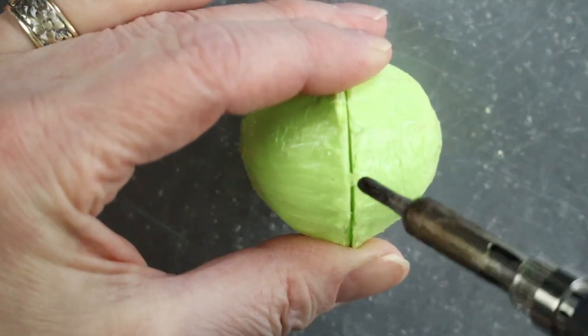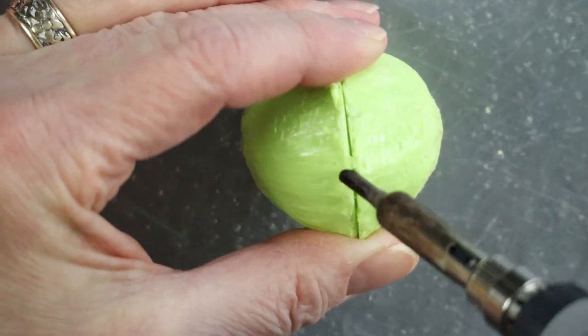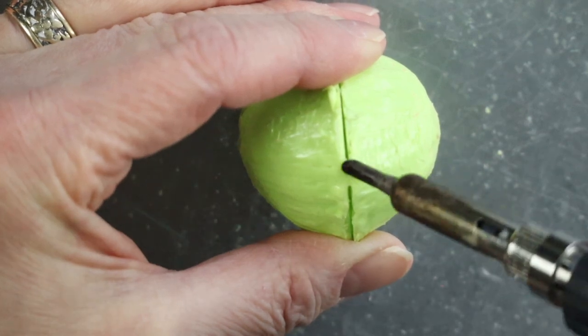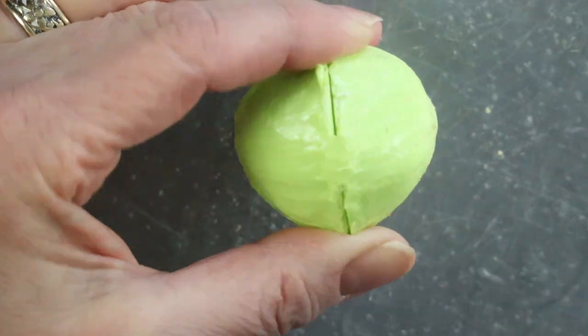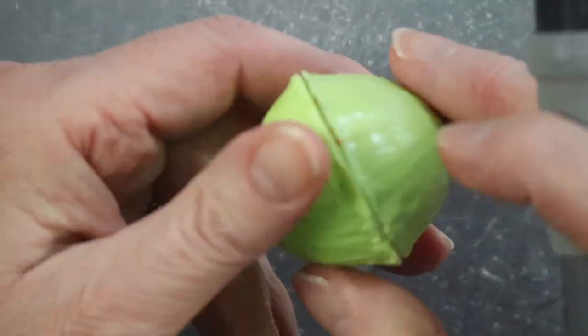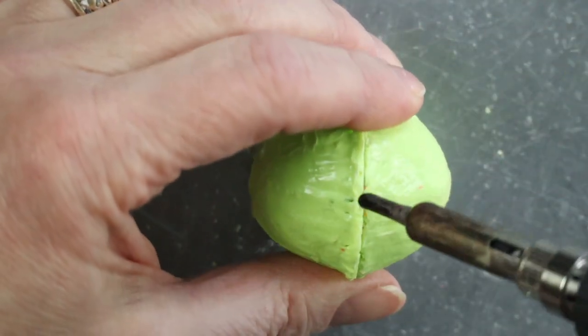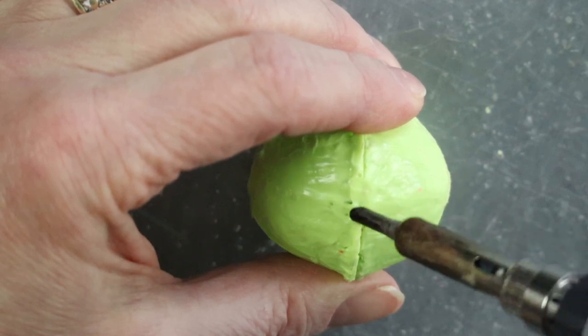Now join it. First at the opposite sides and then all over. And smooth the seam.